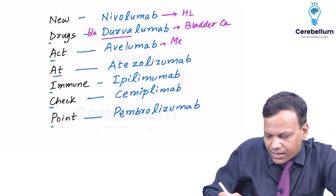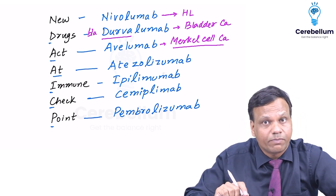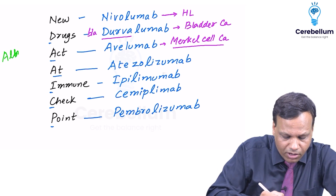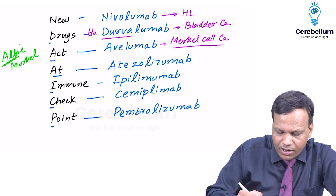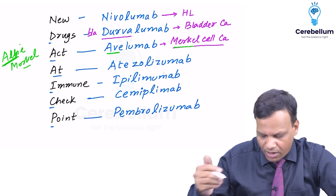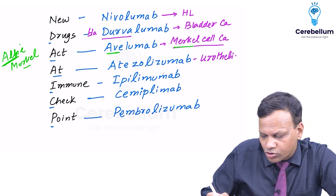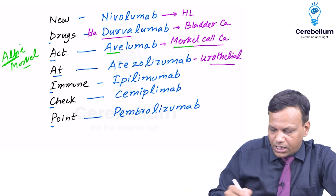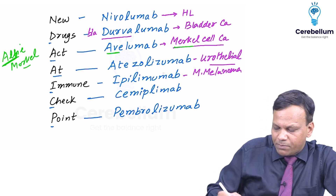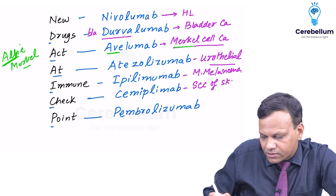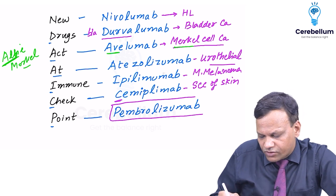Avelumab is used for Merkel cell carcinoma. To remember, there was a South African cricket player called L.B. Morkle — remove the 'L' and it becomes Avelumab — so Avelumab is used for Merkel cell carcinoma. Atezolizumab is also for urothelial carcinoma or urinary bladder carcinoma. Ipilimumab is for malignant melanoma. Cemiplimab is for squamous cell carcinoma of skin — remember C for cutaneous cancer.